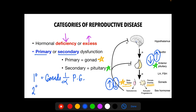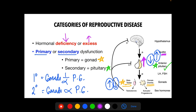In secondary dysfunction, the steroid hormones in the gonads are directly related to the gonadotropin levels of the pituitary gland. The problem is in the pituitary gland. If the anterior pituitary produces increased gonadotropin hormones, that also increases steroid hormone production in the ovaries and testis — they are directly proportional. Conversely, if the anterior pituitary cannot produce enough hormones, that leads to decreased hormone production in the gonads.